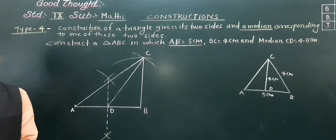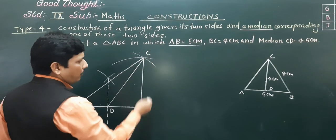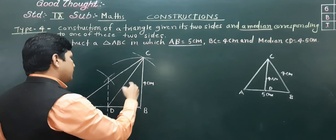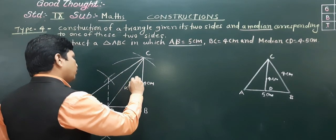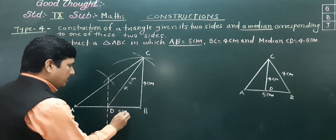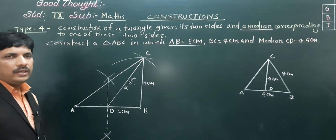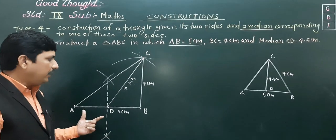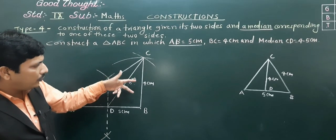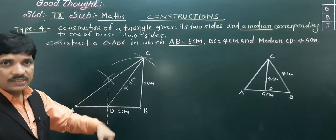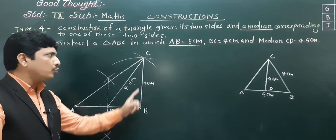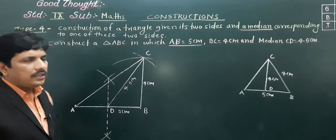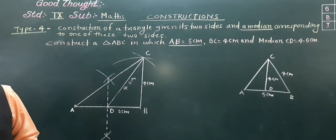Now label the measurements: BC is equal to 4 centimeter, DC is 4.5 centimeter, and AB is equal to 5 centimeter. This is the required triangle when its median and two sides are given. The median is of one of the known sides — we know the length of BC and AB, so we must have the median of one of those two sides. This is a very easy construction.